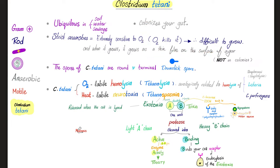Given the difficulty of culturing Clostridium tetani, when it does grow on culture it forms a very thin film on the surface, not discrete robust colonies. Clostridium tetani can make spores — the spores are round and terminal, giving it the classic drumstick appearance. We call this the drumstick spore.